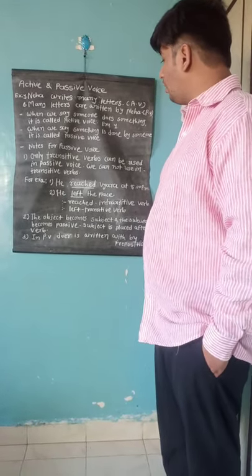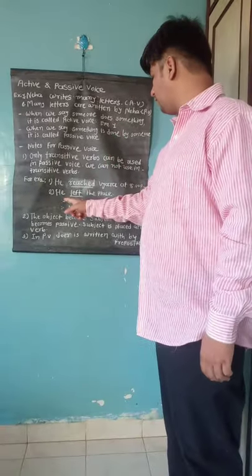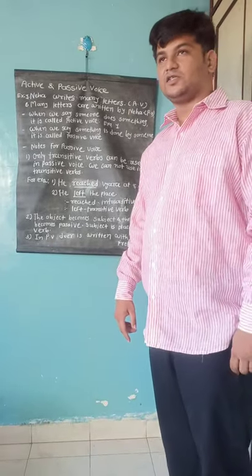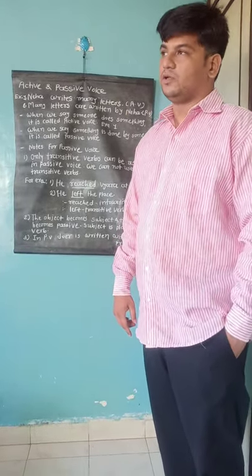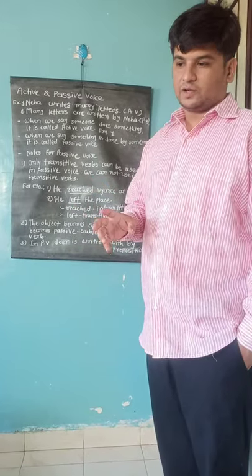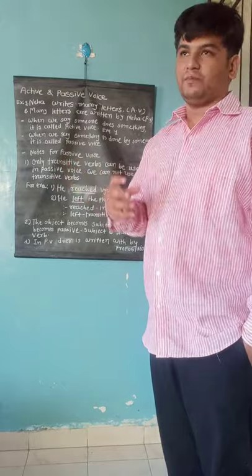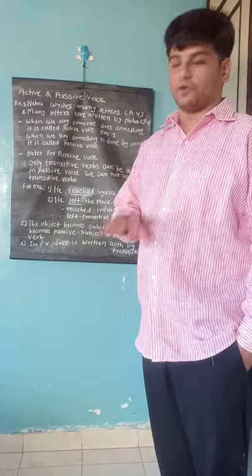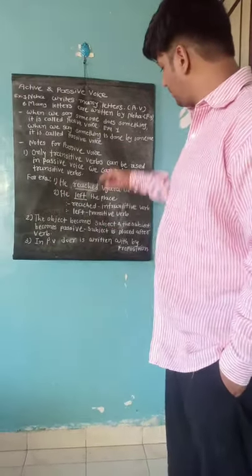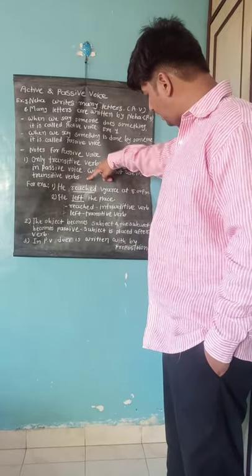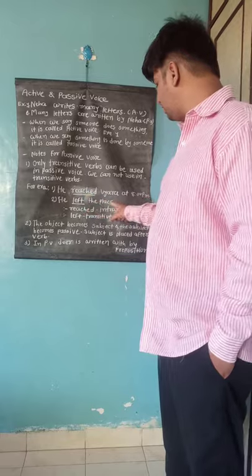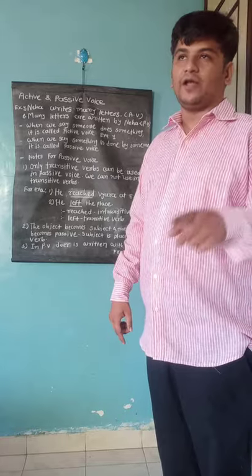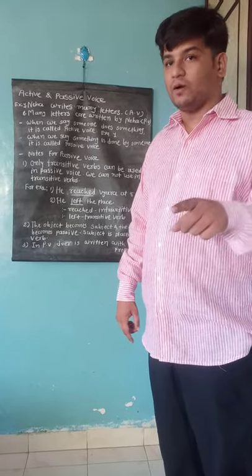The first rule is that only transitive verbs can be used in passive voice — we cannot use intransitive verbs. Transitive verbs are those with which we can frame passive voice, and intransitive verbs are those with which we cannot make passive voice. For example: 'He reached Vyara at 8 p.m.' and 'He left the place.' Here, 'reached' is an intransitive verb.